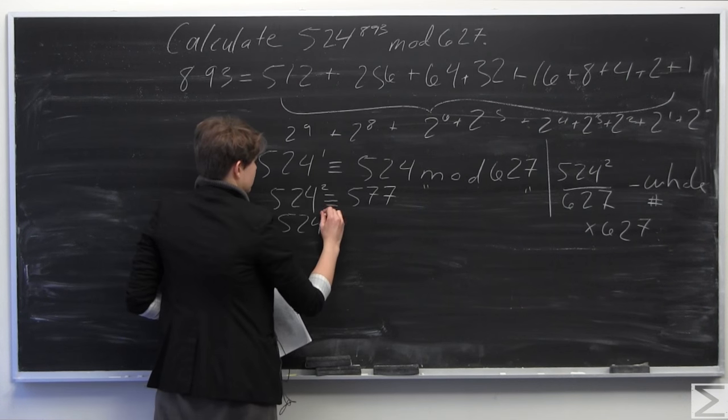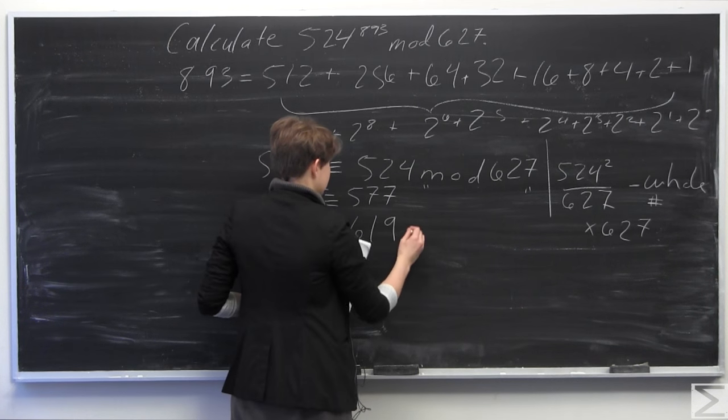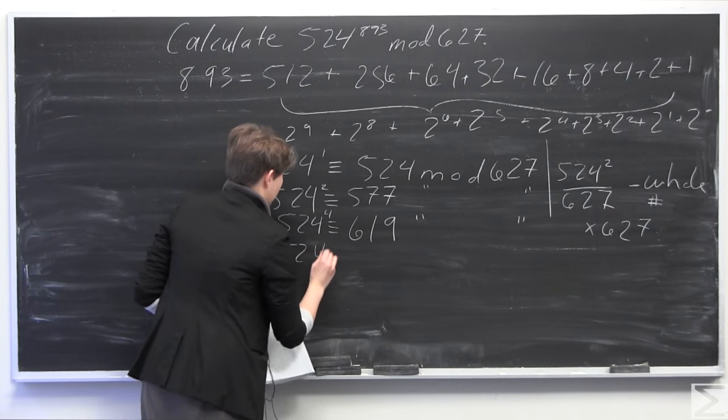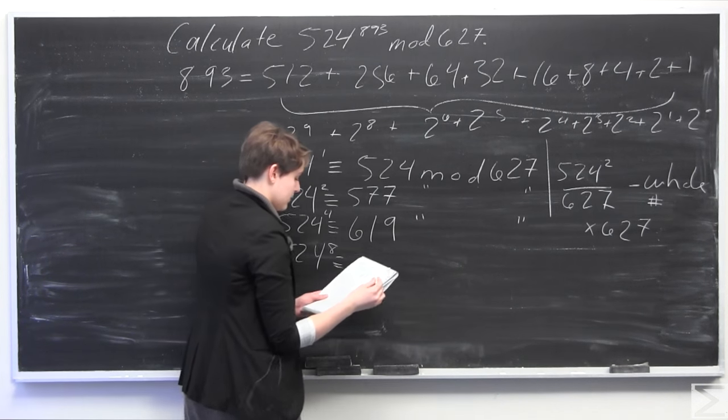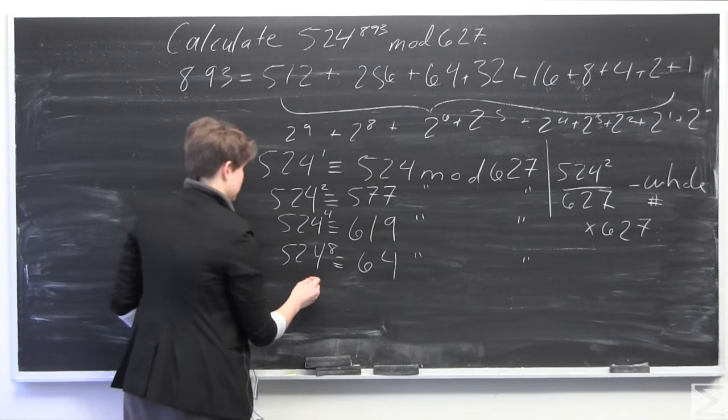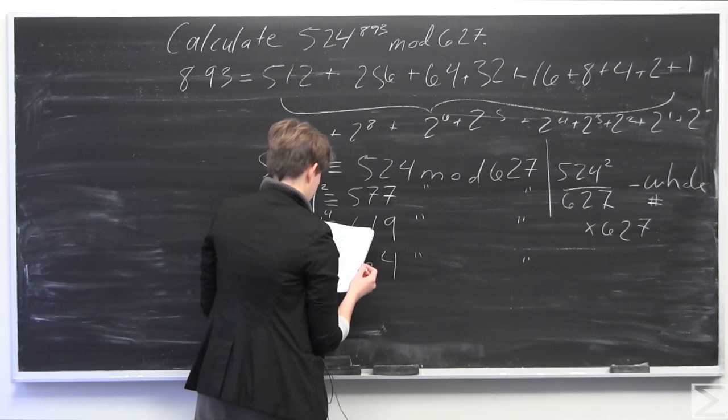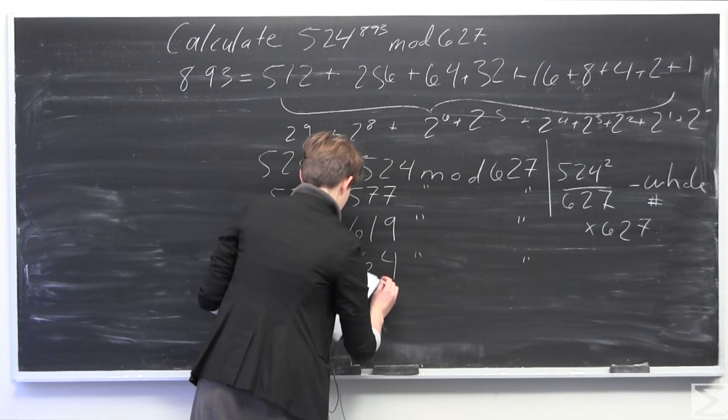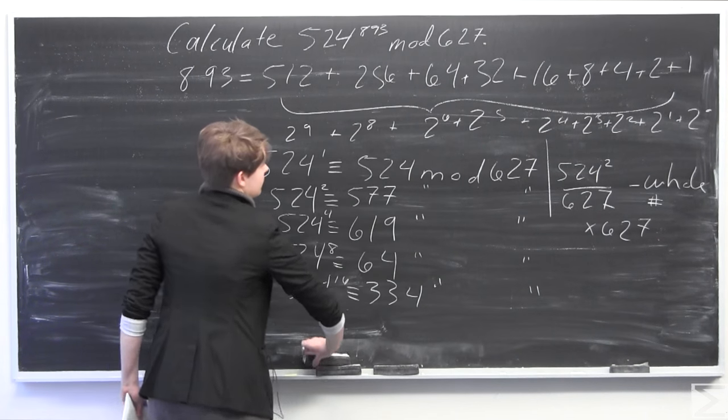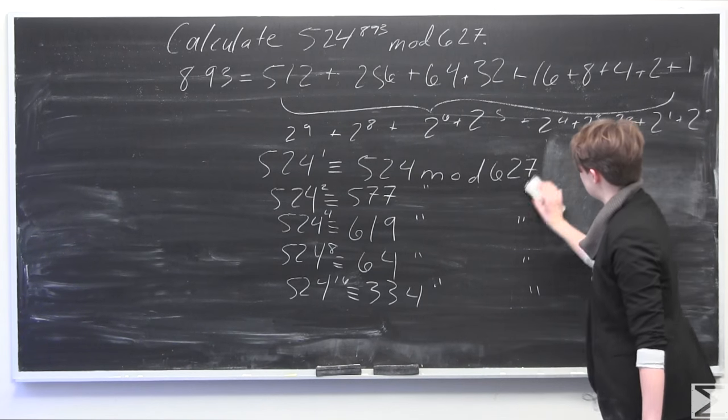So now we take 524 to the fourth, so we just square this. And when we reduce them to the modulus, we get 619 mod 627. 524 to the eighth, squaring this and repeating that procedure, is going to be congruent to 64 mod 627. 524 to the 16th is congruent to 334 mod 627. I'm going to erase this over here, so I have room to write the rest of the powers here.